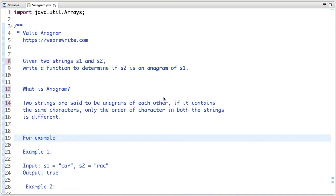Given two strings s1 and s2, write a function to determine if s2 is an anagram of s1. Two strings are said to be anagrams of each other if they contain the same characters, only the order of characters in both strings is different.